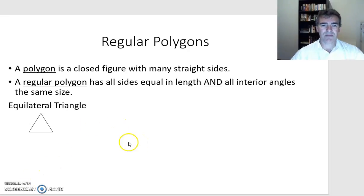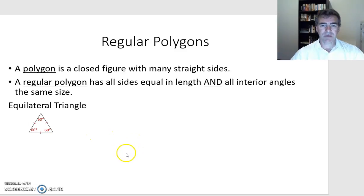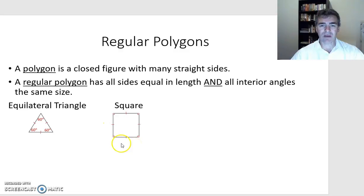Let's have a look at some examples. An equilateral triangle is a regular polygon — all three sides are the same length, and all three angles are the same. With a regular polygon, all three angles are 60 degrees in an equilateral triangle. A four-sided regular polygon is known as a square — all four sides the same, and all four angles equal at 90 degrees.